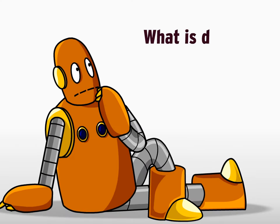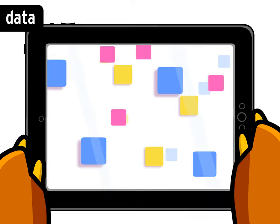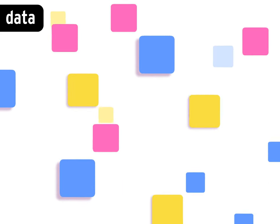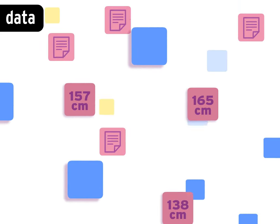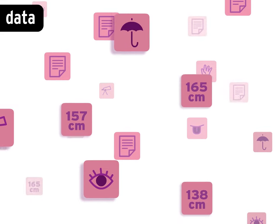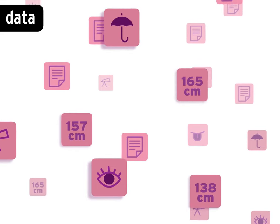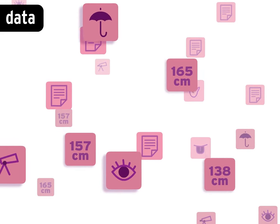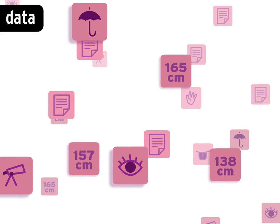What is data? Data are a collection of information in the form of numbers, text, or images. We say data are because data always includes more than one thing.